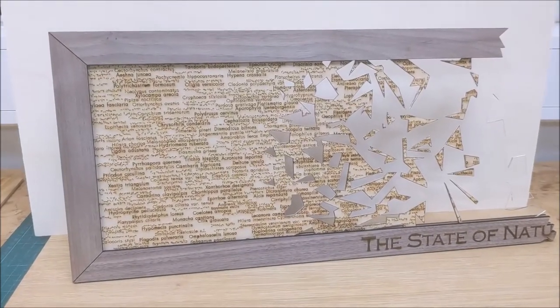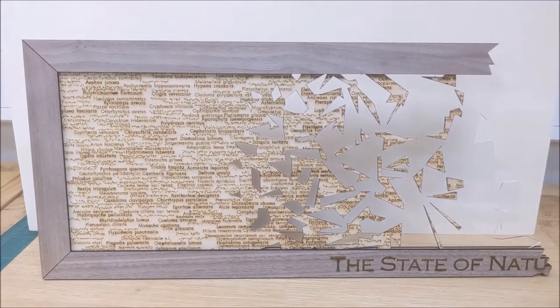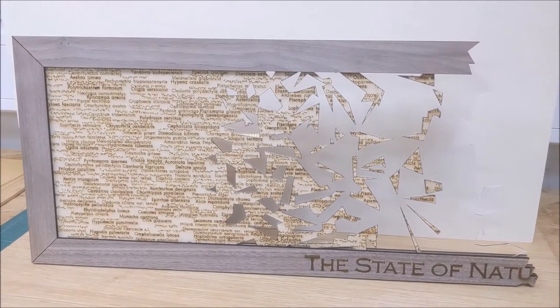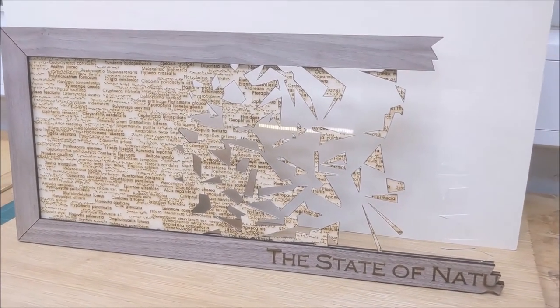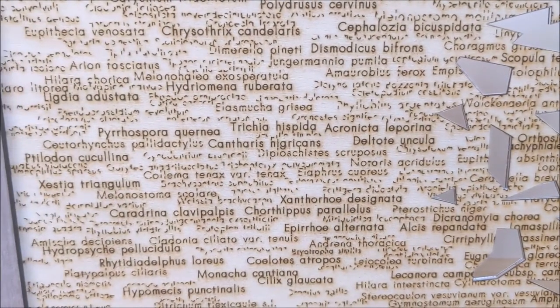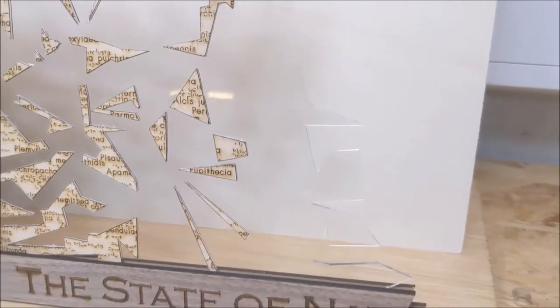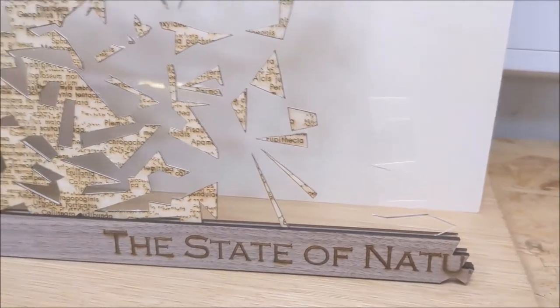This is 'An Incomplete Picture,' the name of a piece I created for the Constructing a Digital Environment Art Science Hackathon in July of 2022. It explores uncertainty and data gaps in species trends in the UK using a dataset created by Charlie Oathwaite et al. in 2019, available on the EIDC.